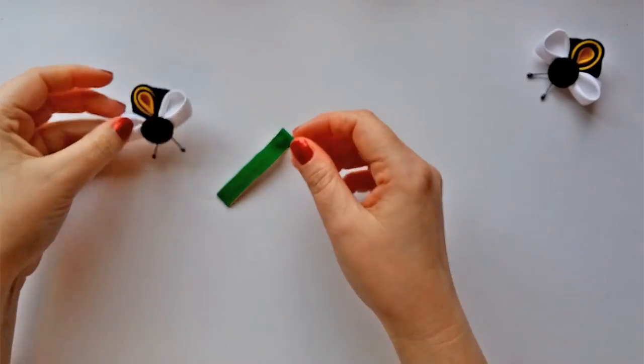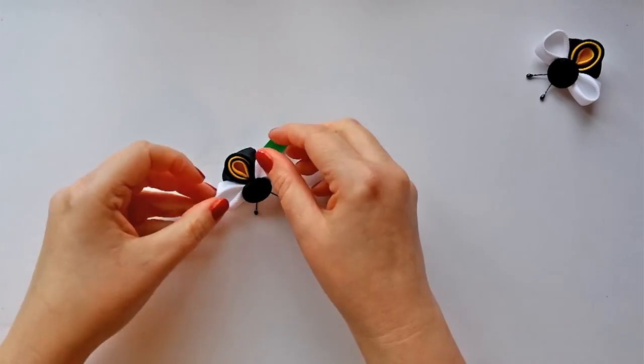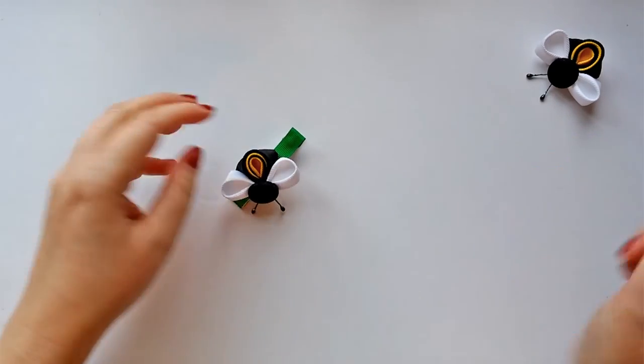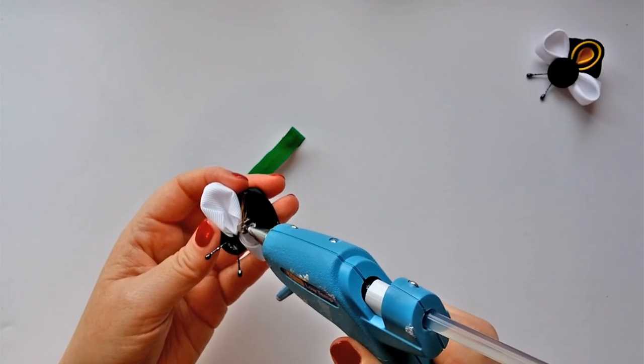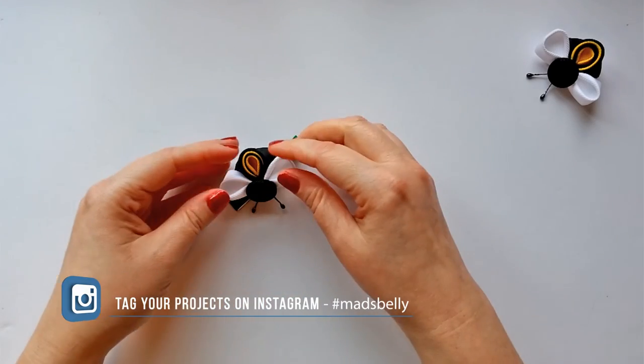Now decide how you want your bumblebee to be placed on your clip. I like mine on a slight angle. Just make sure that you don't place it over the handle or every time you open the clip you'll squish your bumblebee. Just apply some hot glue to the center of your bumblebee and press it down on top of the clip to secure. And that's it, you're done.